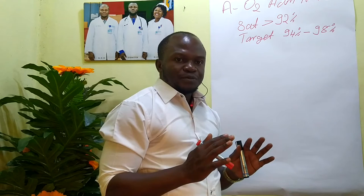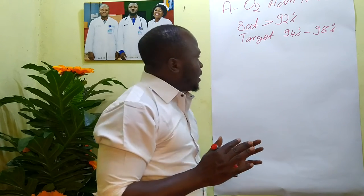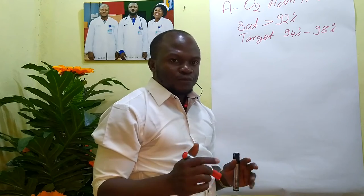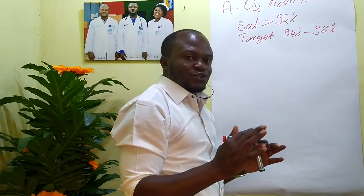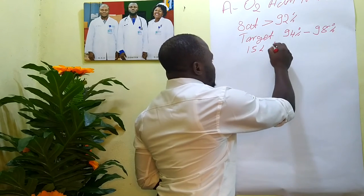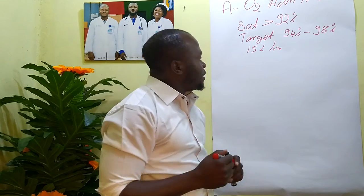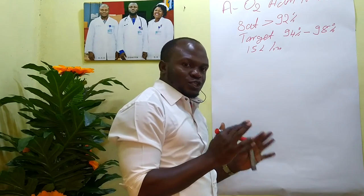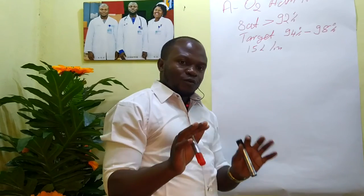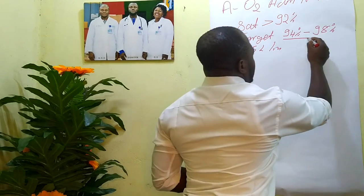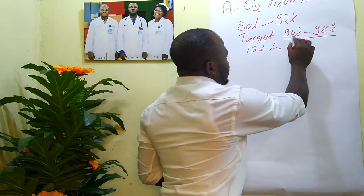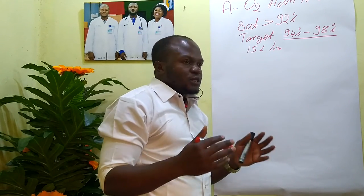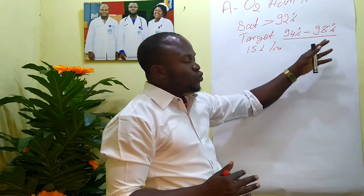When you have a critically ill septic patient — either in septic shock or unconscious — your starting point for oxygen administration should be 15 liters per minute. If you have a septic patient who is not critically ill, meaning not in shock or not unconscious, administer just enough oxygen to achieve the target of 94% to 98%, which can be within the range of 1 to 10 liters per minute, depending on the patient's response.